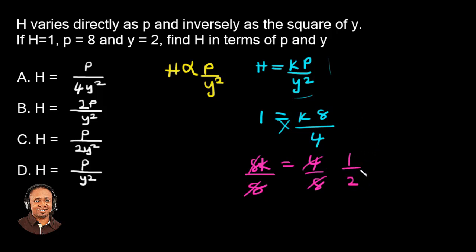So if k is 1 over 2, we'll now substitute that part into this equation. So this is what we're going to have. We have h. Then k, which is 1 over 2. So we have 1, then the 2 we go down. Then we have the p, 1 times p, that will just be p. Then we have the y squared. So this is our answer in terms of p and y.